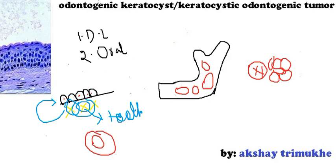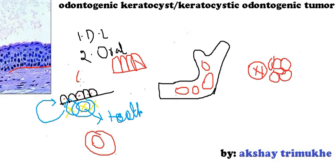Now coming to the histopathology of Odontogenic Keratocyst, there are some characteristic features to remember. The basal cells are tall columnar and arranged in a parallel fashion, mimicking tombstones or a picket fence — so this is called the tombstone or picket fence appearance. The stratified layers above show generally six to ten layers of cells. The surface epithelium is corrugated or ruffled.